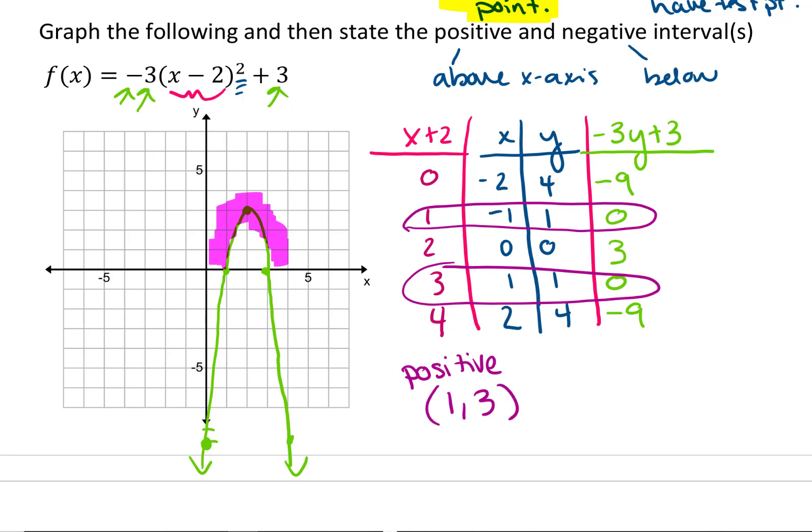And negative, the graph is below. So from negative infinity up to one, and from three to positive infinity.